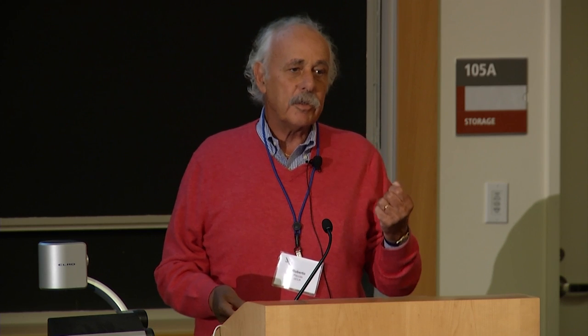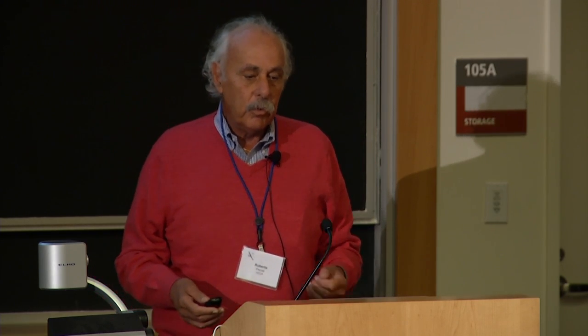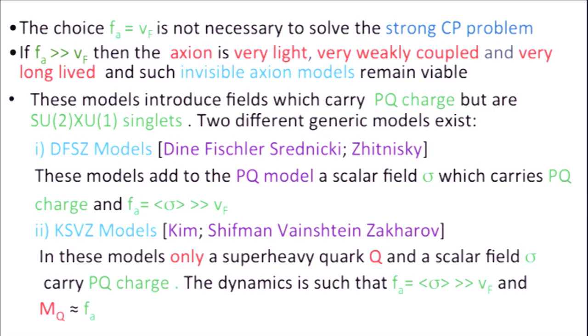The interesting thing — what we did not expect at the time — is that the choice that the scale of the axion is the same as the weak interaction scale is not necessary. In fact, you could make the scale of the axion much larger than the weak interaction scale, and if you do that, your axions become very light — because everything scales like 1 over F — they become very long-lived and very weakly coupled, so they become invisible. They still solve the problem, but in principle they are really getting to be nothing.